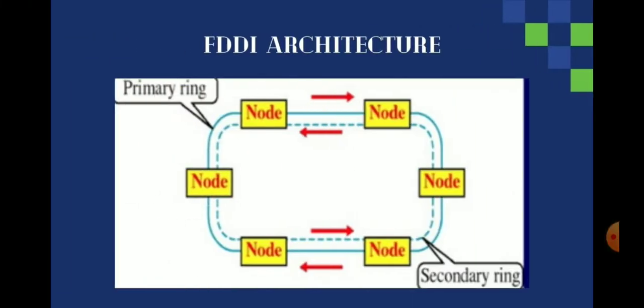In the FDDI architecture diagram, you can see two rings — the primary ring and the secondary ring — both routed in opposite directions. The primary ring is mainly used for data transmission, and the secondary is for recovery purposes.